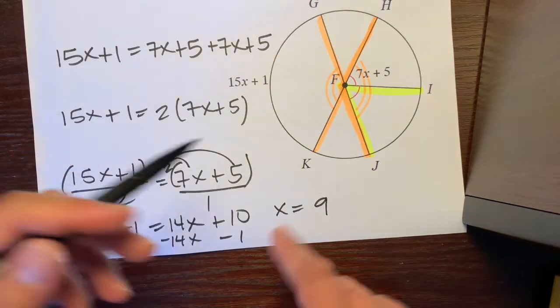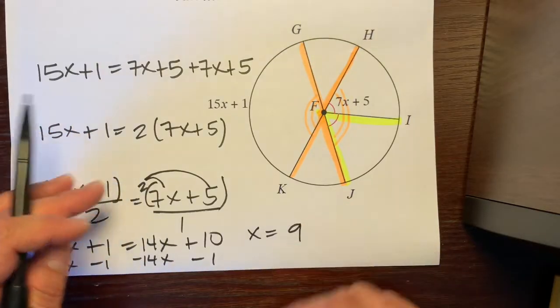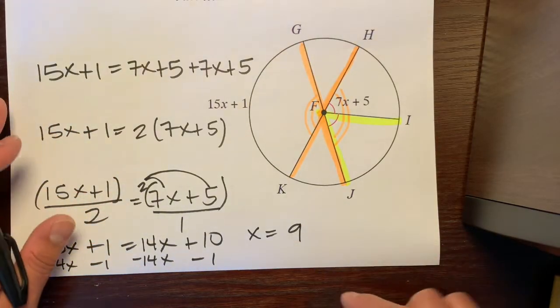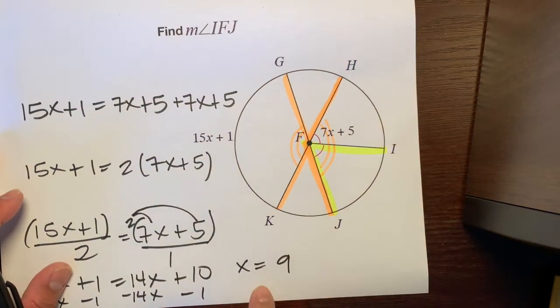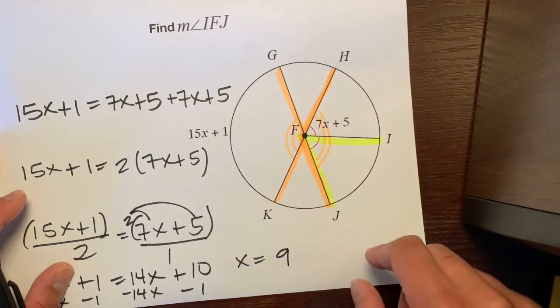Then, you're tempted to box this and say, this is my final answer. Highlight and be proud. But if you put that on a test, it would be wrong because the question doesn't ask for x. It asks for IFJ, that original angle that we highlighted.